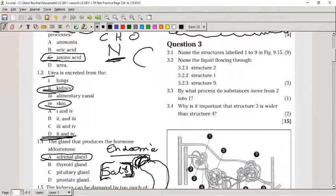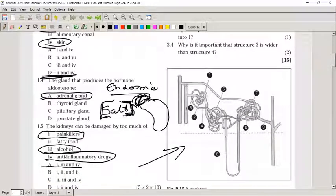Question 3: Name the structures labeled 1 to 9 in Figure 9.15. This is the nephron, so let's take a look at the parts. Number one is the Bowman's capsule. Number two is the glomerulus. Together the Bowman's capsule and the glomerulus form what we call the malpighian body. Number three is the arteriole going into the glomerulus. Number four - those are your blood vessels.